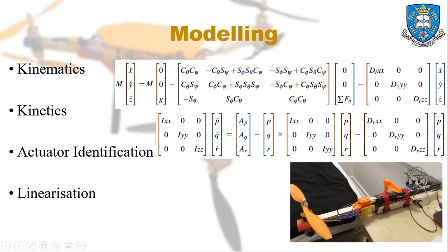The first section of this investigation deals with mathematical modeling, which is required to understand the UAV's characteristics. This is broken down into four stages: kinematics, kinetics, actuator identification and linearization.